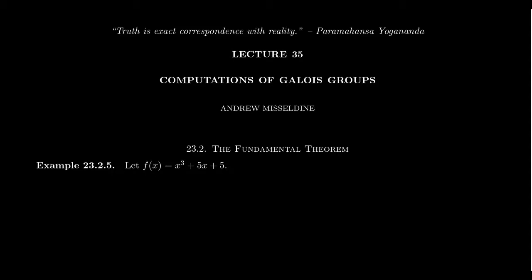In lecture 34, we introduced the fundamental theorem of Galois theory and established the important Galois correspondence between subfields of a field and the subgroups of the Galois group. We did some examples and computed two Galois groups of order four. In lecture 35, I want to do some more computations of Galois groups — these ones will be a little more involved. We want to establish what the Galois groups are for these polynomials and demonstrate what the correspondence between fields and subgroups looks like.